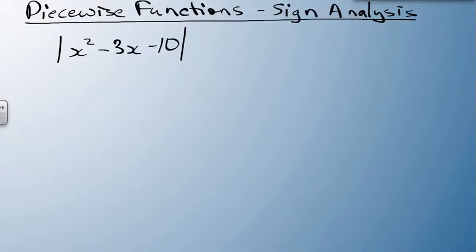If I have a function like this, x squared minus 3x minus 10, an absolute value of all of that, the first thing I want to do is factor it out as much as I can. So I end up with x minus 5 and x plus 2.